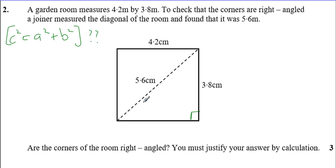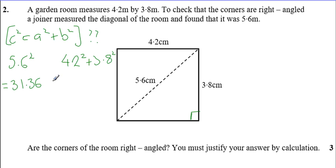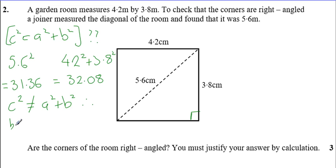The converse of Pythagoras checks whether c² = a² + b². We're going to use the potential hypotenuse — that's the longest side, so 5.6 — and also calculate 4.2² + 3.8². So 5.6² is 31.36, and 4.2² + 3.8² is 32.08. If it were right-angled they would be the same, but they're not, therefore it cannot be right-angled. So c² does not equal a² + b², therefore by the converse of Pythagoras, the corners are not right-angled.